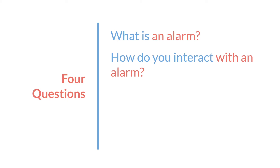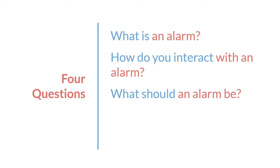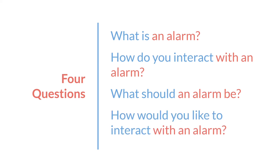The second set of questions is a rephrasing of these first two. The first one is: what should an alarm be? If you were making an alarm, what would your ideal alarm look like? And the next question is: how would you like to interact with an alarm? Again, if you were making an alarm, what would you want to be able to do with it? And with that, I'm going to end this introduction. Thanks for watching.